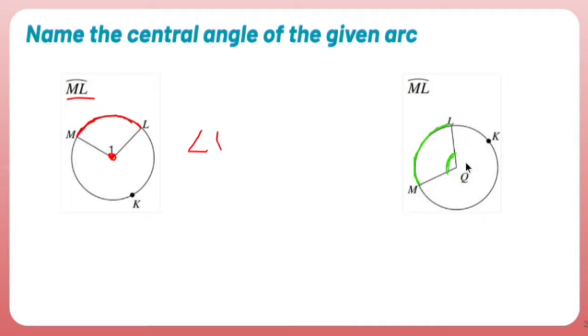So MQL would be the name of this angle. I could call it LQM. It really doesn't matter. Either one, MQL or LQM, both of those work. But the central angle is basically your vertex is the center. Pretty simple.